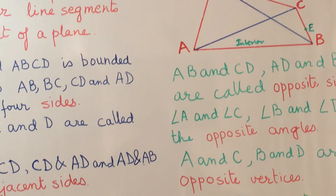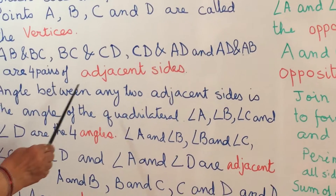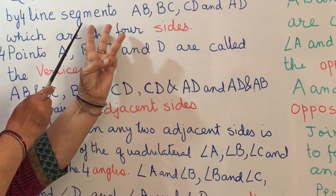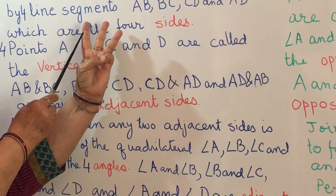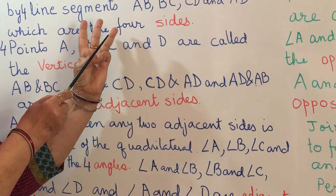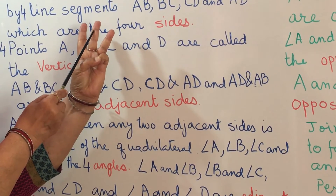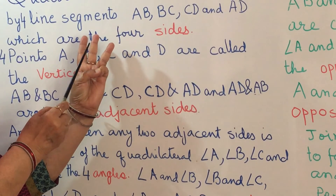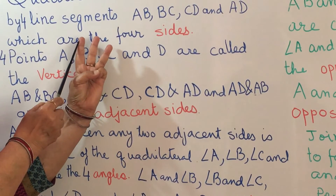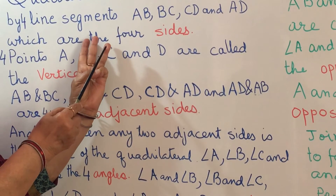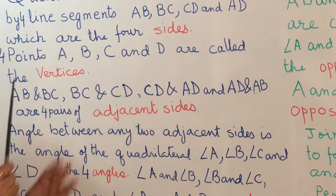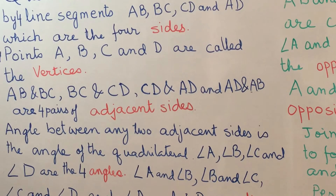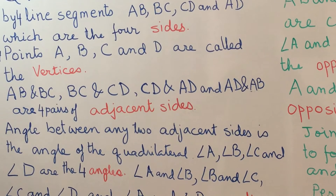Next we come to the word adjacent. Look at my three fingers — the middle finger is next to the first finger, and this finger is next to the middle finger. When two fingers are next to each other, we say they are adjacent to each other. In the quadrilateral, sides AB and BC are next to each other, so they are adjacent sides.